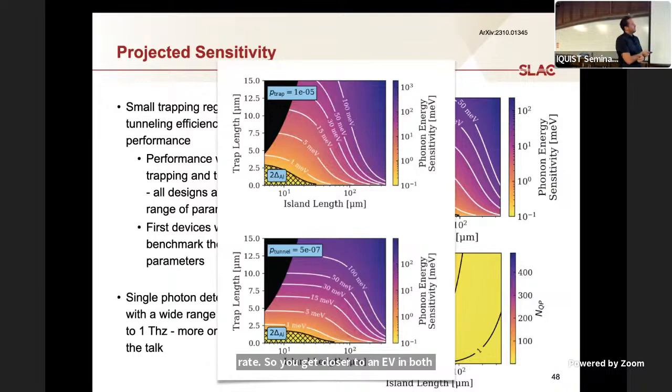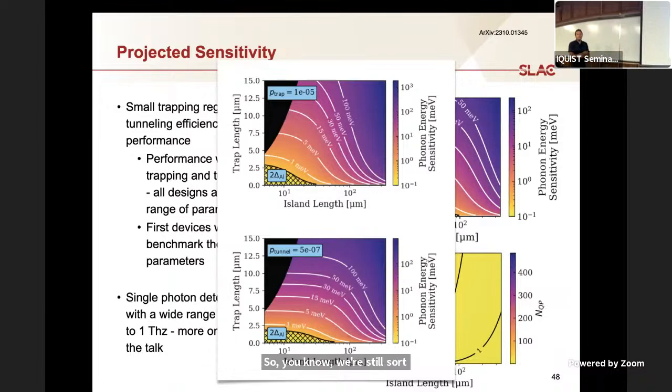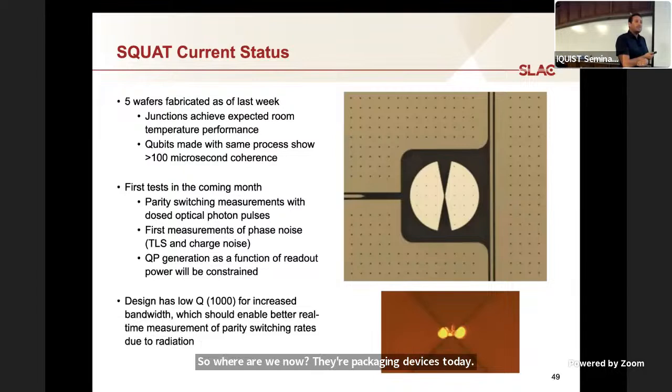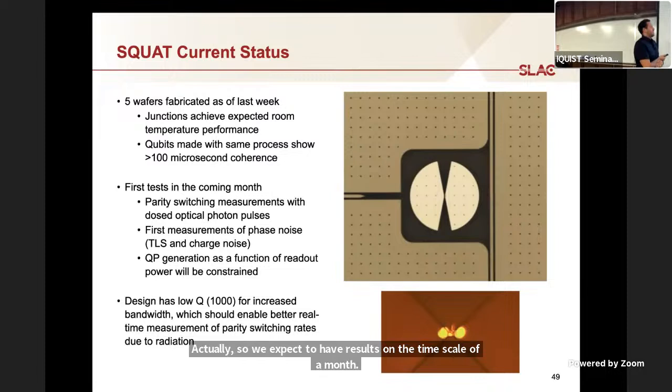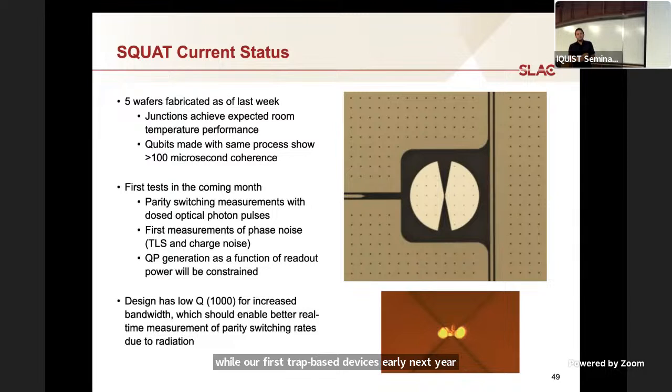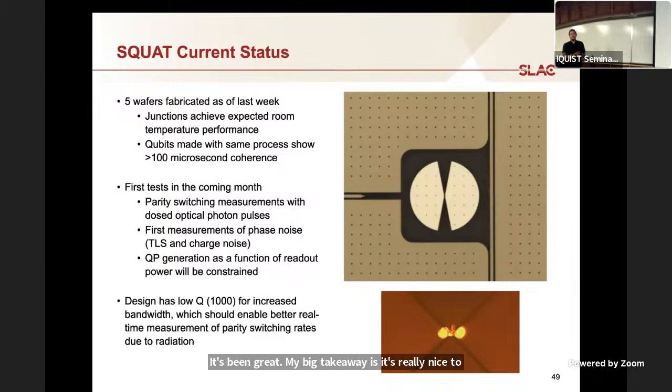We're still sort of sub 10 milliEV in an optimistic case. And when you add realistic assumptions, I think we'll still be under a hundred milliEV for first devices. So where are we now? They're packaging devices today actually. So we expect to have results on the timescale of a month. These are aluminum only devices. We're doing some aluminum manganese junction development over the next three months. We'll have our first trap based devices early next year. So I'll come back in two years, I'll tell you how it went. It's been great. My big takeaway is it's really nice to have a big fab facility and don't have to buy your own e-beam tools and evaporators and stuff. Otherwise this would have taken a long time.